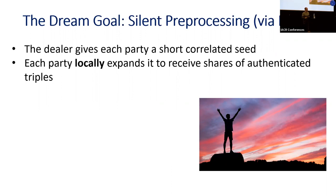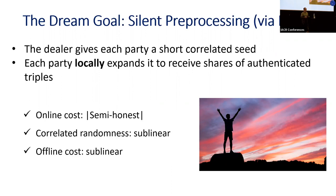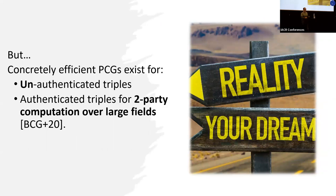The idea with PCGs is that the dealer gives each party a short correlated seed, and then each party can locally expand its seed to receive shares of authenticated triples. This would mean the correlated randomness is sublinear in the circuit size and the offline communication cost is also sublinear. However, currently we only have concretely efficient PCGs for unauthenticated triples—for malicious security, concretely efficient PCGs exist only for two-party computation over large fields.